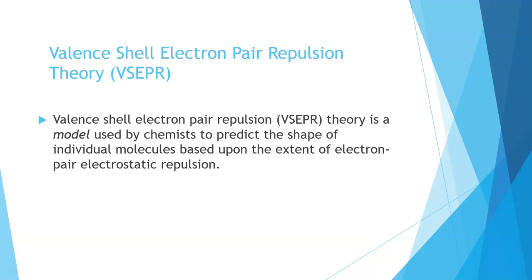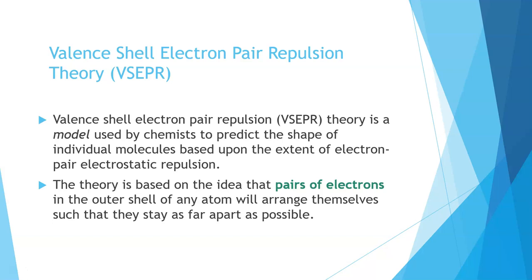It is essentially a model that predicts the shape of molecules based on how pairs of electrons repel in the molecular structure. It's based on the idea that pairs of electrons will have different levels of repulsion and will therefore arrange themselves based on how much they're repelling each other.